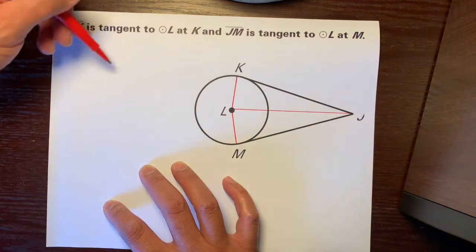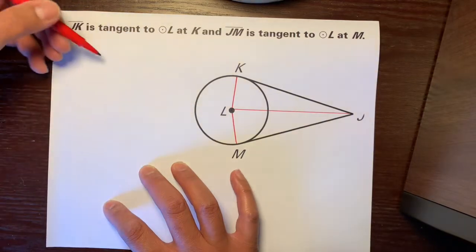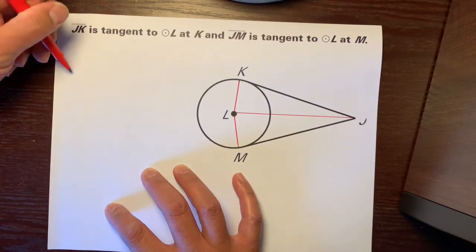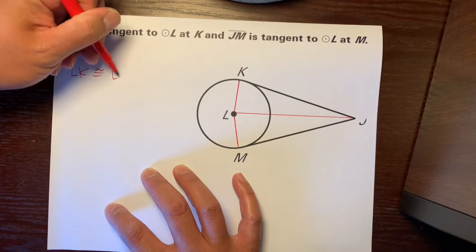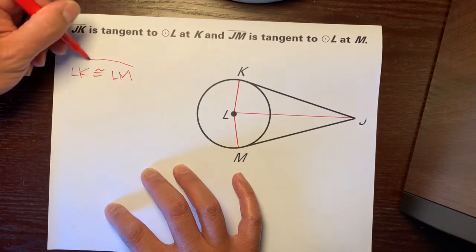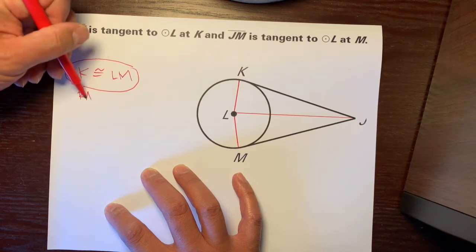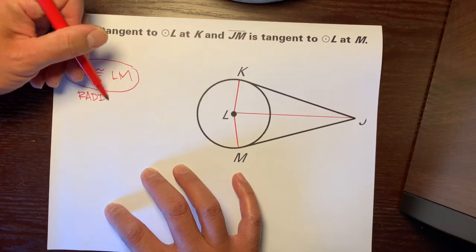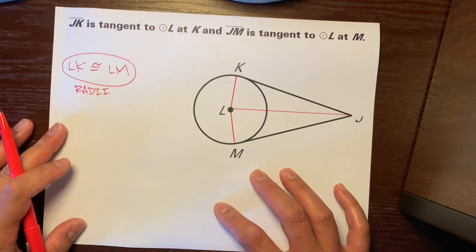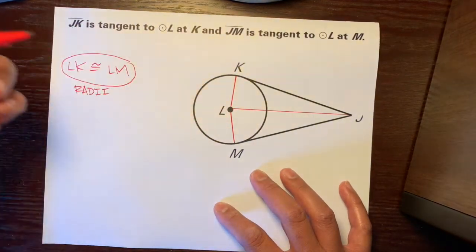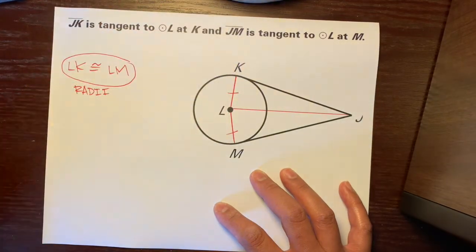The first bubble in our flow chart, because this is a radius, and this is a radius, we can say that LK is congruent to LM. There's our first bubble, and you could just say radius, or radii, or definition of radii, or same radii in a circle. So just all the radii in a circle are congruent. And let's put a tick mark here, and a tick mark here.